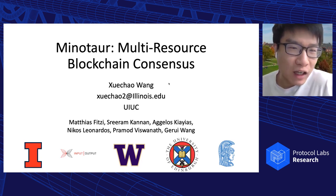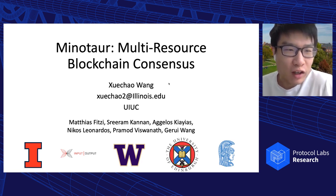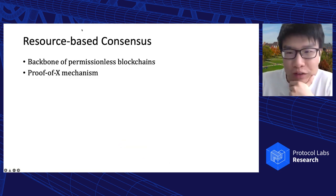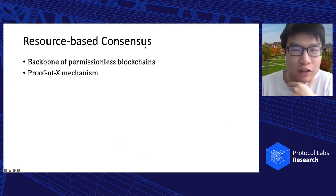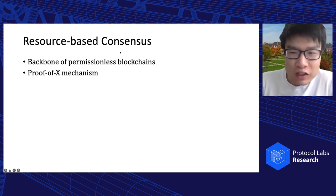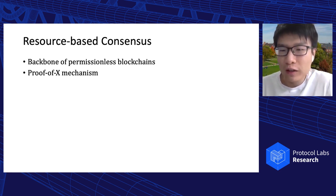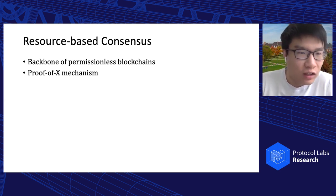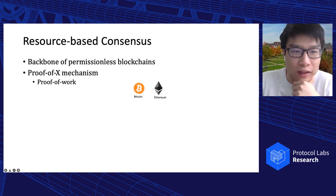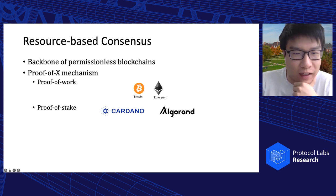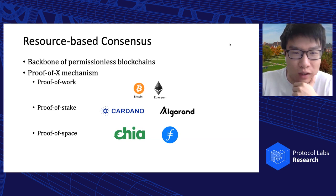I'm honored to present our recent work on multi-resource blockchain consensus today at the PL research seminar. Resource-based consensus is the backbone of permissionless blockchains. Participation in such consensus protocols is enabled by proving possession of a certain type of resource. Usually this is referred to as the proof-of-X mechanism in the literature, including proof of work used in Bitcoin and Ethereum, and proof of stake used in Cardano and Algorand.